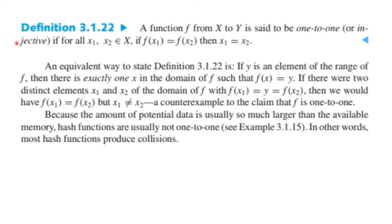We have different kinds of functions. A function f is said to be one-to-one, or sometimes the word injective is used, if x_1 and x_2 are in X, and f(x_1) equals f(x_2), then x_1 equals x_2. What this is really saying is, if f(x_1) and f(x_2) are equal to each other, then x_1 is equal to x_2. Only one thing is mapped to these elements in the range. A cool way to say this is, if y is an element of the range, there's exactly one element in the domain such that y equals f(x). A way to prove something is not one-to-one is to provide a counterexample. Because the amount of potential data is usually much larger than the available memory, hash functions are usually not one-to-one. In other words, most hash functions do produce collisions.